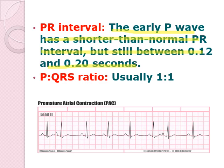If you can notice, the PR interval is shorter; however, it is still within normal range. The P-to-QRS is still 1-to-1, meaning 1 P-wave, 1 QRS, 1 P-wave, another QRS complex. That is maintained in your premature atrial contractions.